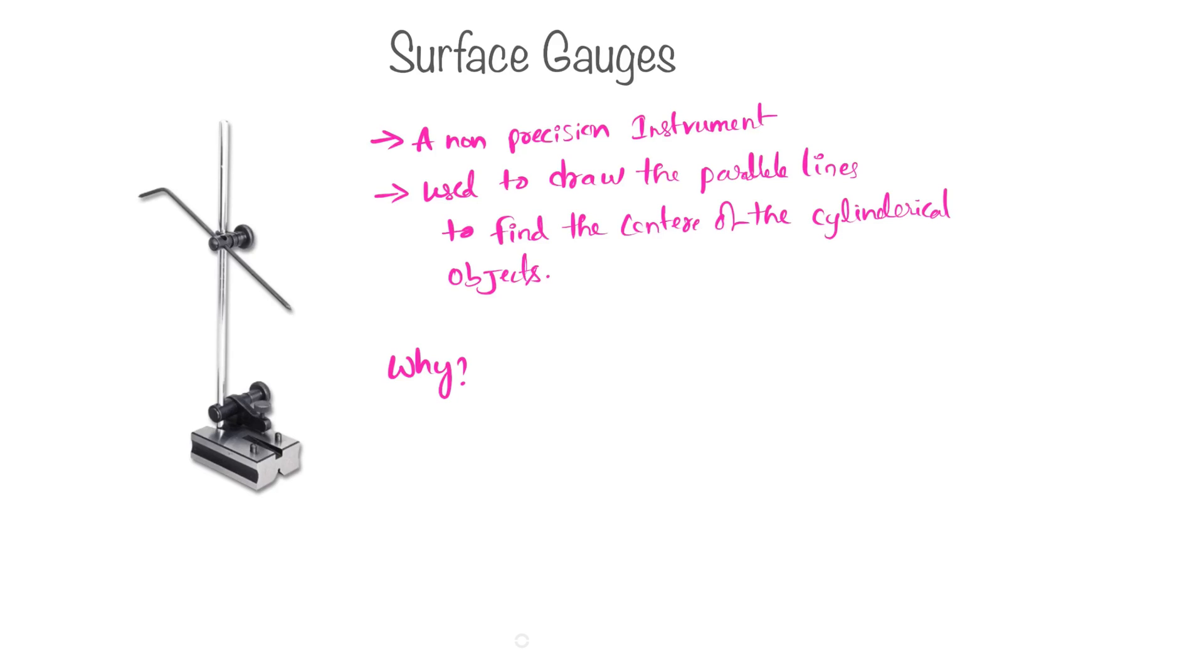So in this place, surface gauge will be used along with the V block to scribble the parallel lines and figure out the central line of the cylindrical objects. Let us see the construction of surface gauge. This is the magnetic base where we can control the magnetic field of this magnetic base so that we can lock the position of this surface gauge.